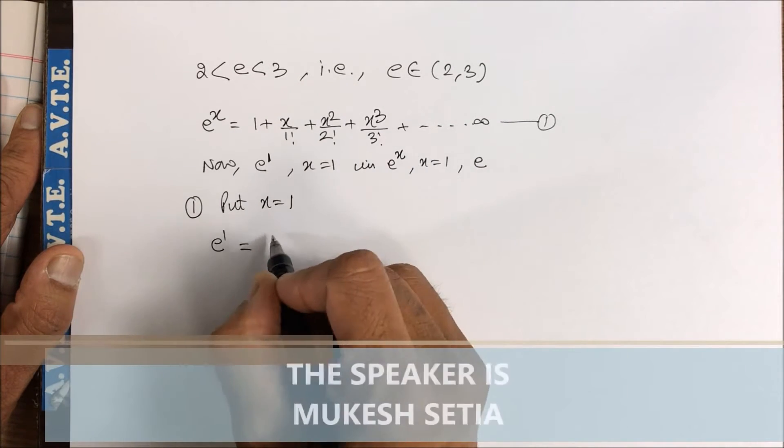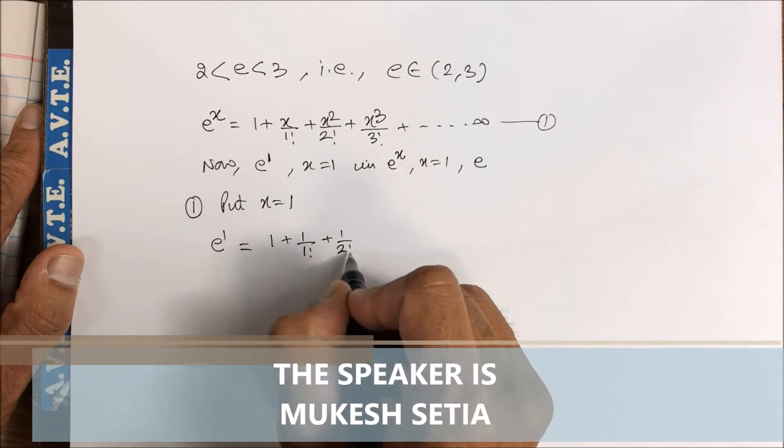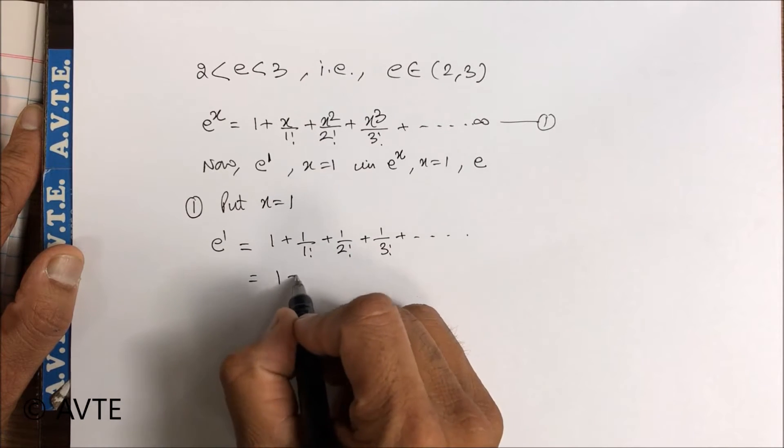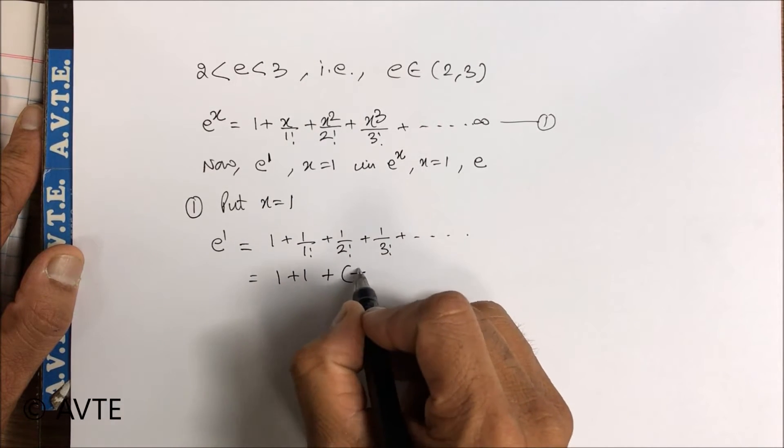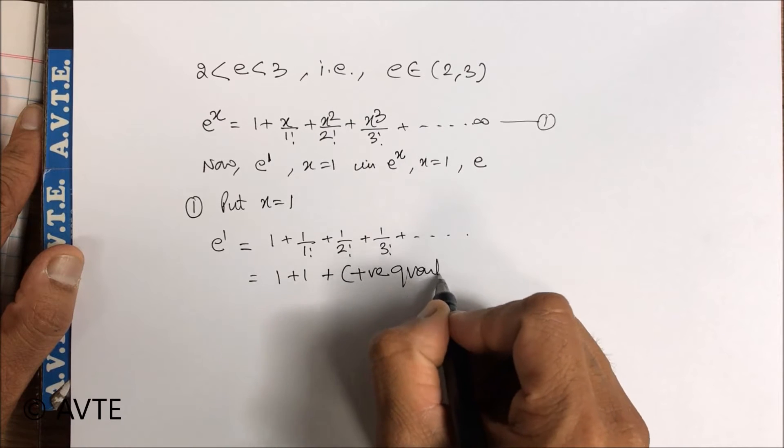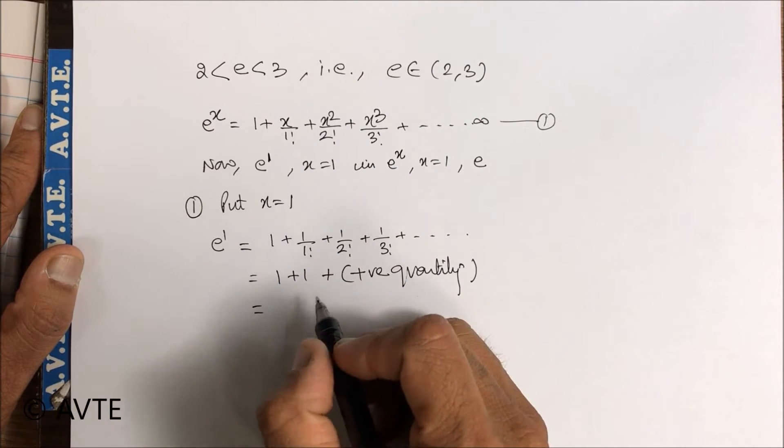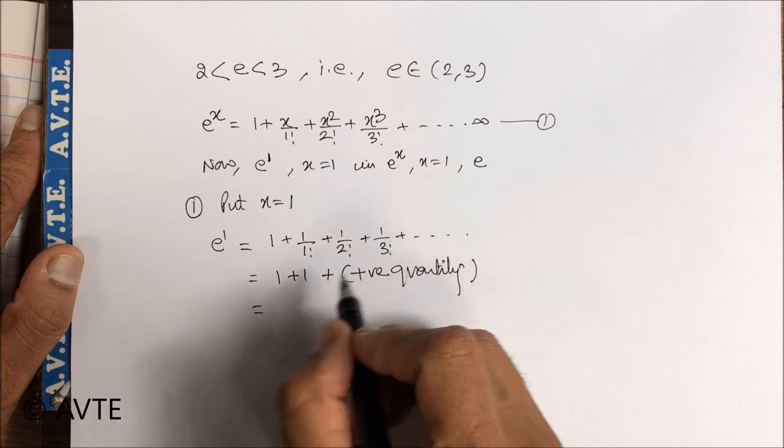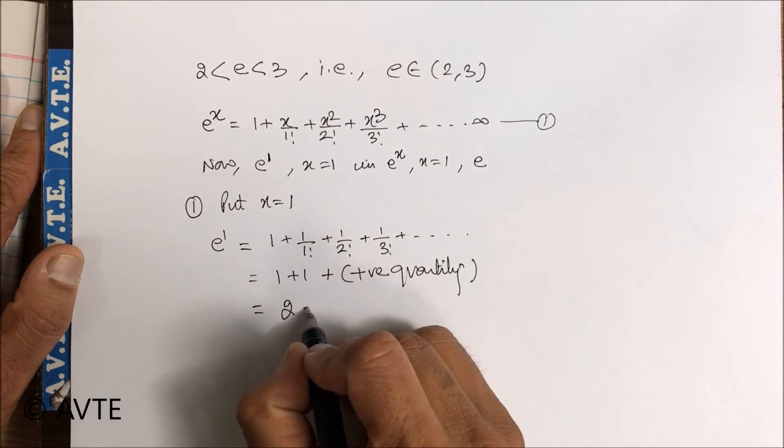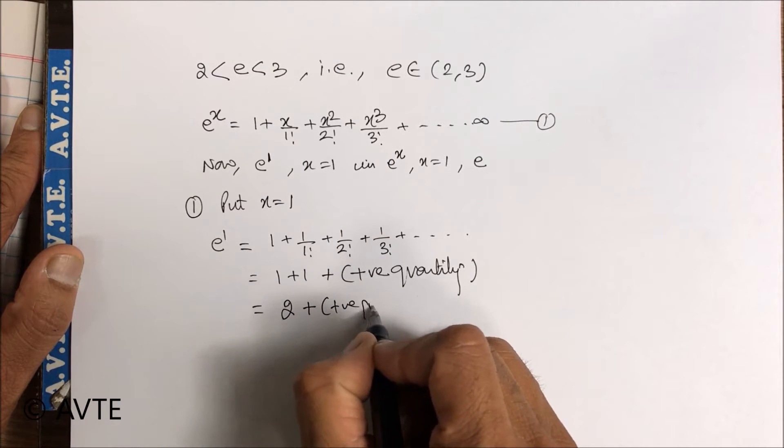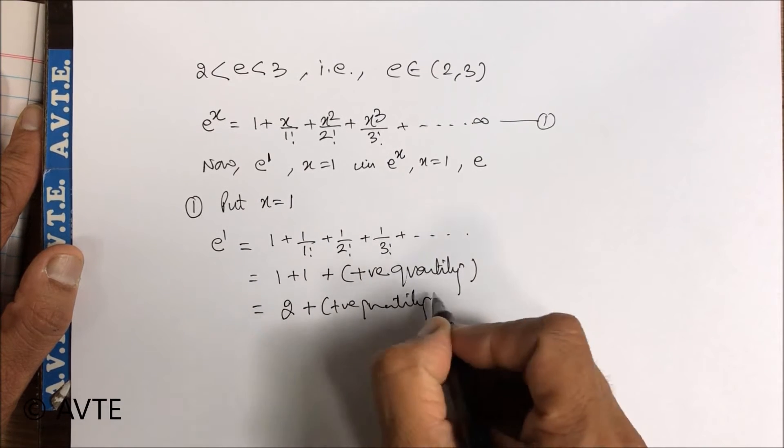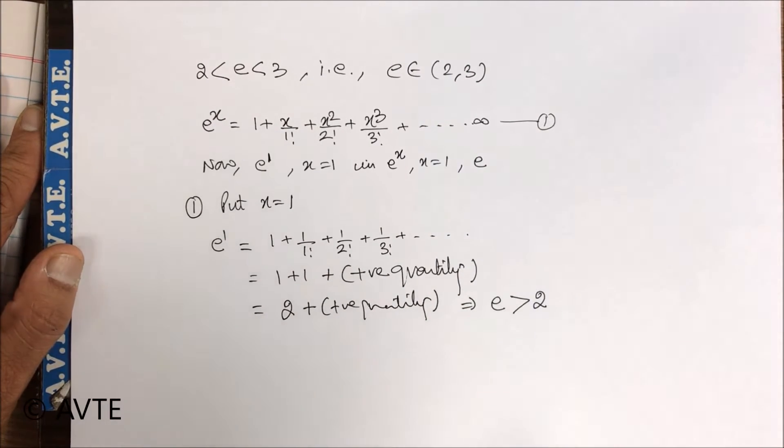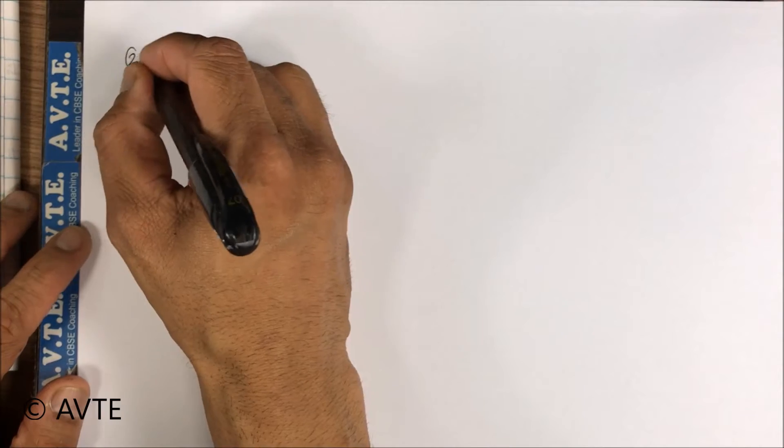Can you see that this is some positive quantity and that positive quantity is the accumulation of fractions. So this is 2 plus some positive quantity, so this implies that e is greater than 2. So one part.